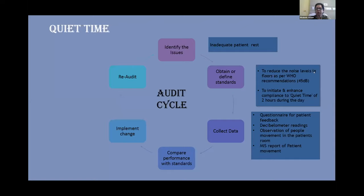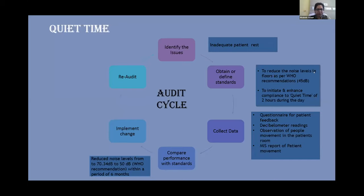A lot of data collection was done. Questionnaires were administered to patients, decibel meter readings were taken across the hospital across shifts in various units, and mystery observers monitored people movement in and out of patient rooms. We also looked at the MIS report of patient movement to see what type of movement happens during afternoon hours when patients should be resting — sometimes patients were being moved to diagnostic areas or transfer ins and transfer outs were happening. What came out from the data was that against the WHO recommendation of about 50 decibels, our noise levels were as high as 70 decibels.